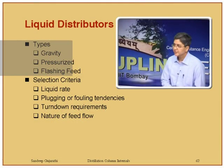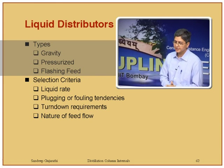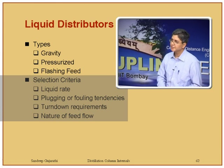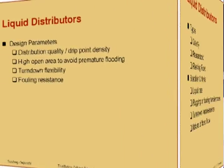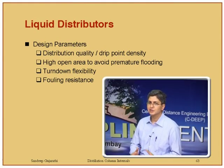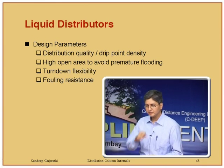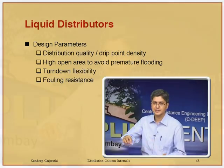Liquid distributors come in various types: gravity distributors, pressurized distributors, flashing feed distributors. Selection criteria depend on liquid rate, plugging or fouling tendencies, turndown requirements, and nature of the feed flow. The key design parameter is drip point density — the number of drip points per unit cross-sectional area. For larger packing like IMTP 70, a lower drip point density is acceptable, whereas for smaller packing like IMTP 15, each packing element needs to see liquid when it is fed onto the packing.